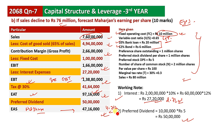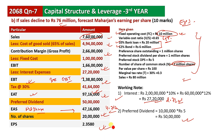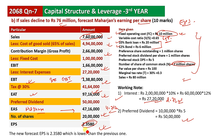Number of shares is 2 million. EPS is 2.3580, or earning per share is 2.3580. Therefore, the new forecasted EPS is 2.3580, which is lower than the previous one. The new forecasted EPS is 2.3580.